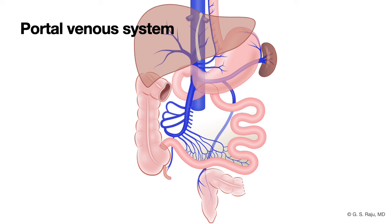So how is the portal venous system different from the systemic venous system? If you think about a vein starting in the leg, it starts as capillaries, venules, and veins. They become bigger, join other veins, and finally end up in the inferior vena cava or the superior vena cava, and then they enter into the right atrium.